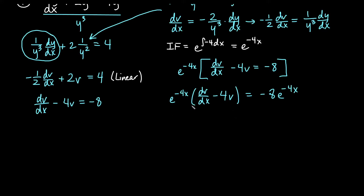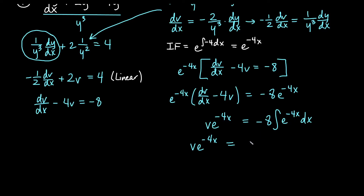The left side is a product rule, so we don't distribute — it becomes the derivative of v times the integrating factor. Taking the antiderivative of the left side gives v times e to the negative 4x. On the right side, we compute the integral: the constant multiple negative 4 means we divide by negative 4, giving 2 e to the negative 4x, plus a constant of integration. Dividing everything by e to the negative 4x, we get v equals 2 plus c e to the positive 4x.